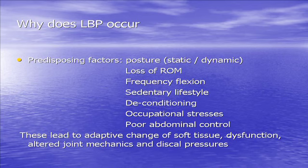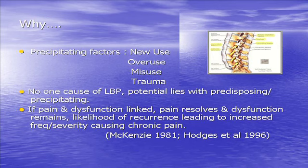These factors can lead to adaptive changes, disc changes, and joint mechanic changes, which lead into a process of pain and dysfunction. The problem comes with new use or overuse — you've been out tidying the garden for five hours, come back with back discomfort, slumped on the sofa thinking it'll get better. There is no one cause for back pain. If you've got pain and dysfunction, as the pain settles, people stop doing their exercises and the pain starts to come back. If you can't maximise their functional range of movement, they're already putting themselves into the recurrent bracket.